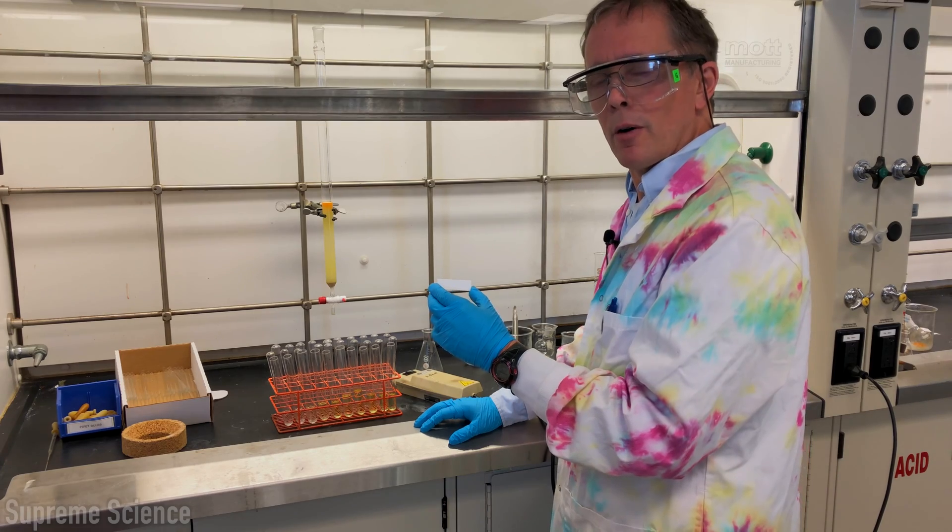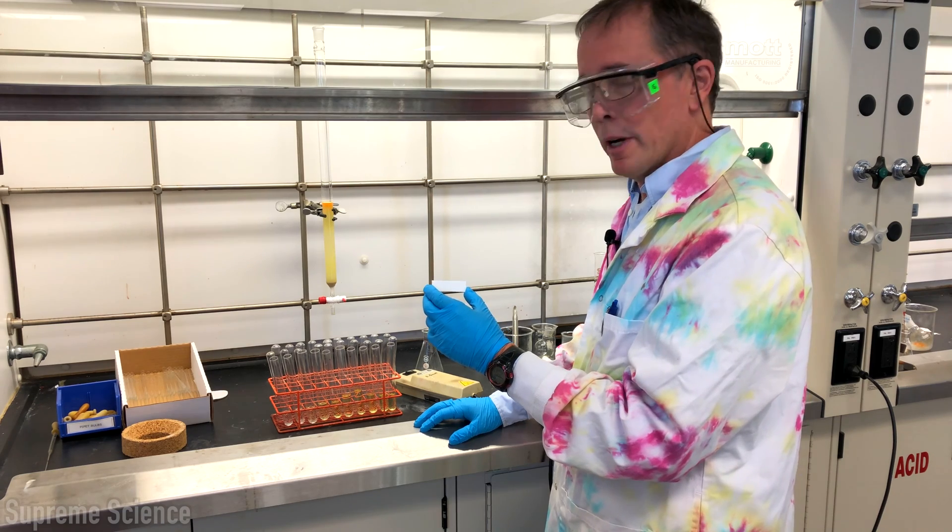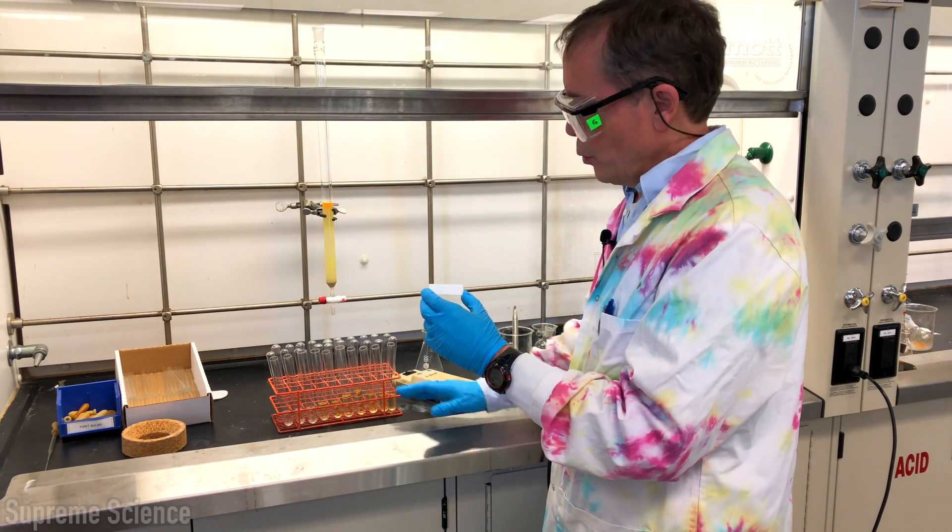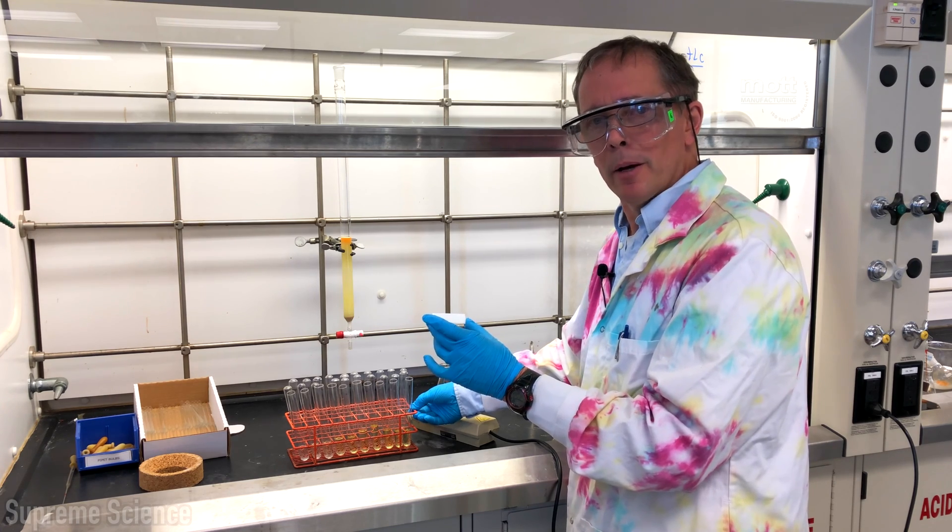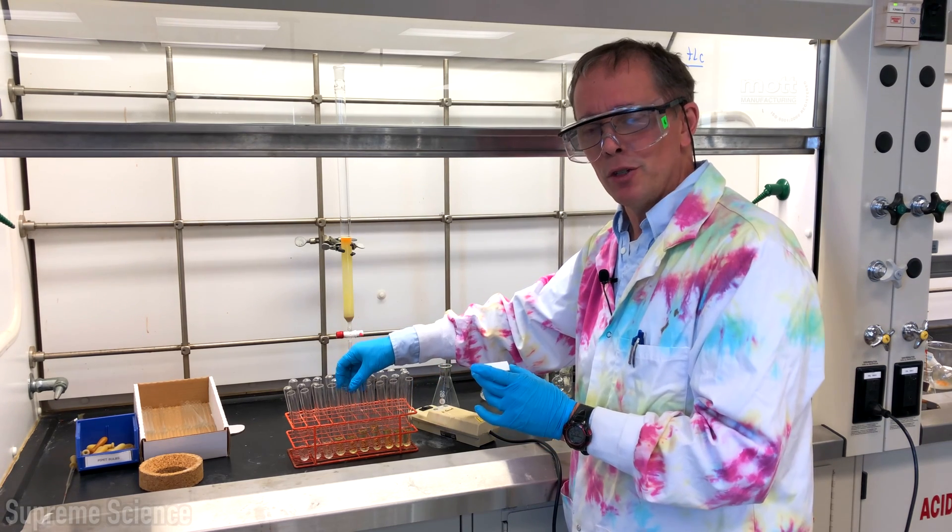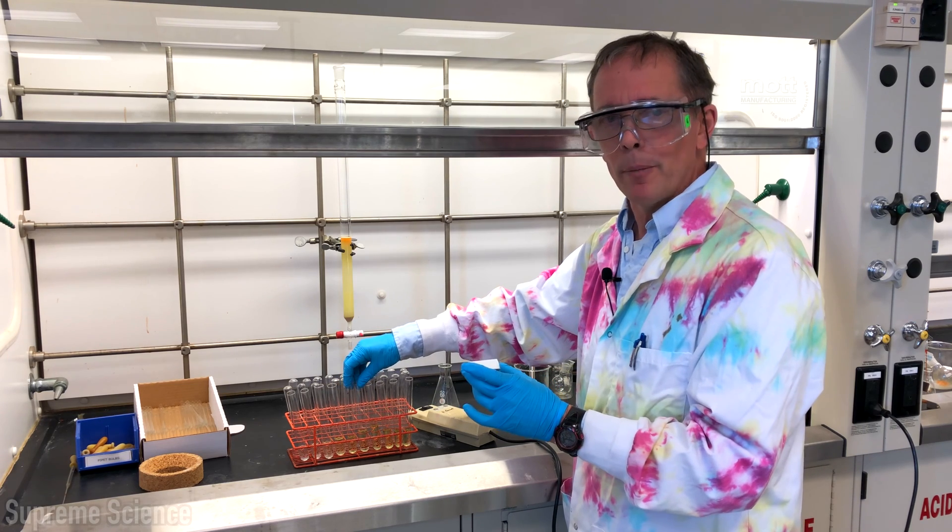Now that we have our high and low spots, we can continue to survey the rest of the fractions to know which tubes we should combine to isolate our desired compounds. We'll combine fractions, put them into a round bottom flask, rotovap them, take an NMR to confirm that we have indeed isolated the pure compound.